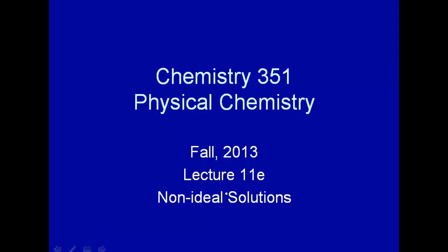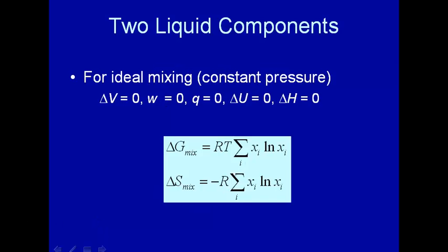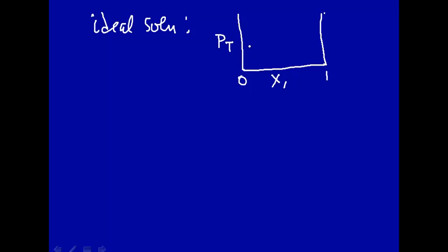Let's first talk more about ideal solutions. For an ideal solution, Raoult's Law is followed. If you look at the total pressure with mole fraction of component 1 going from 0 to 1, Raoult's Law says that this should be a straight line, and that the partial pressures of each individual component would be straight lines. If this plot of total pressure versus composition gives straight lines, then you have an ideal solution.